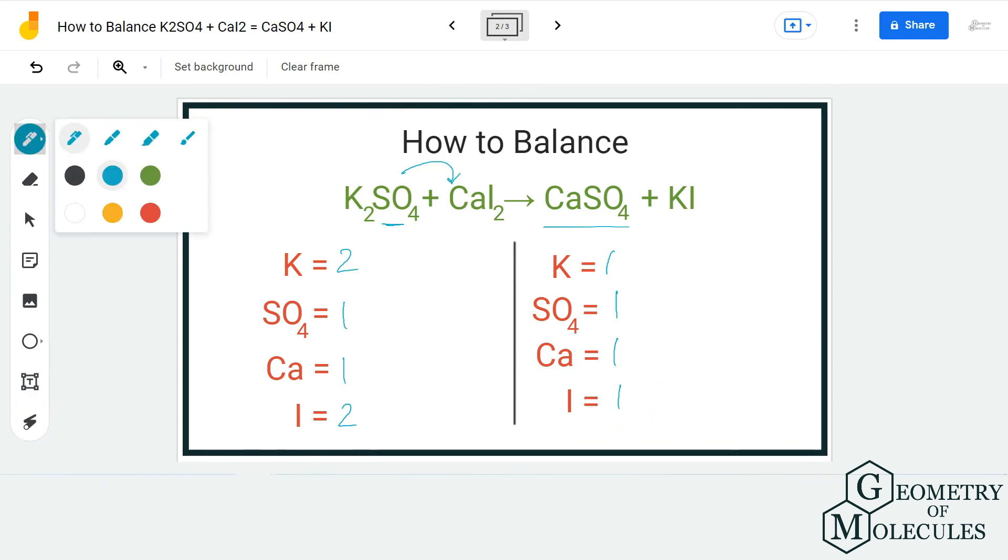All you need to do is add a coefficient 2 before KI and see, it is done. We have two atoms of potassium and two atoms of iodine on the product side as well. This is a very simple reaction and a very simple way to balance this equation.